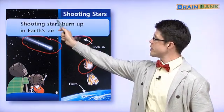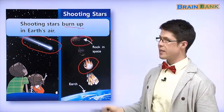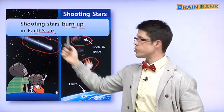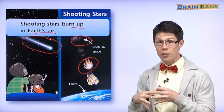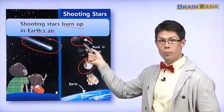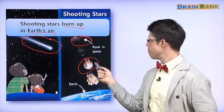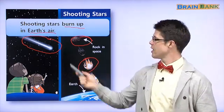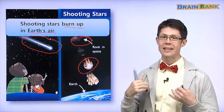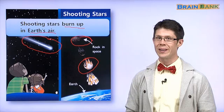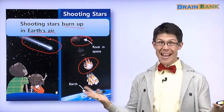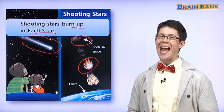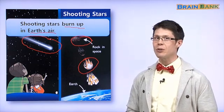So shooting stars burn up in earth's air. When the space rocks touch the air, they burn up. That's why it looks like a star. It's amazing, isn't it? That's everything for part one of At Night. Join me soon for part two.